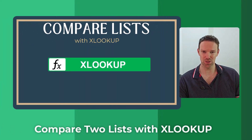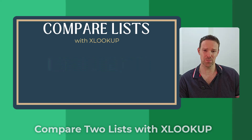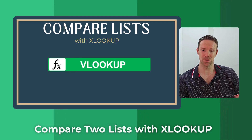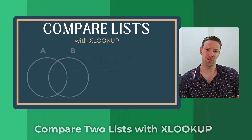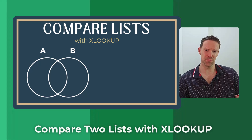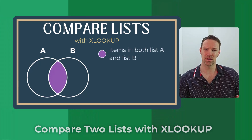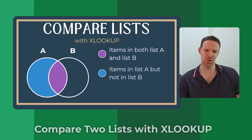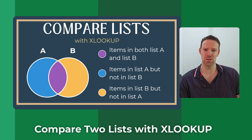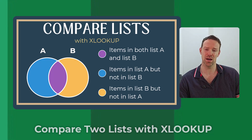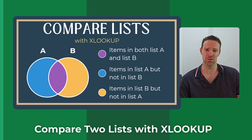Hey everyone, it's John here. In this video we're going to take a look at how we can compare two lists with the XLOOKUP function. I'm going to be using XLOOKUP, but you can do the exact same things with VLOOKUP if you only have access to that function. When you're comparing two lists, you'll be doing one of three things: returning items from list A that are also in list B, items in list A but not in list B, or items in list B but not in list A.